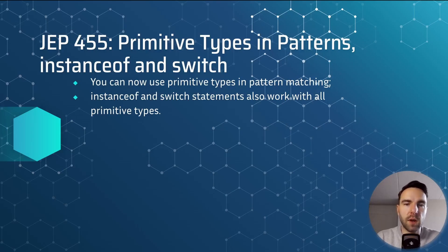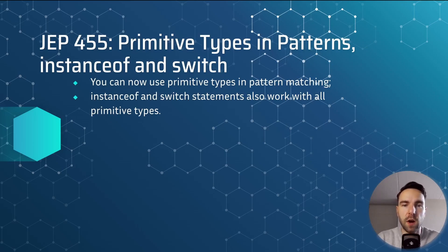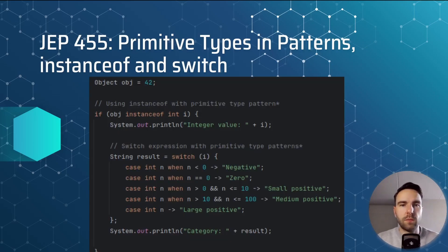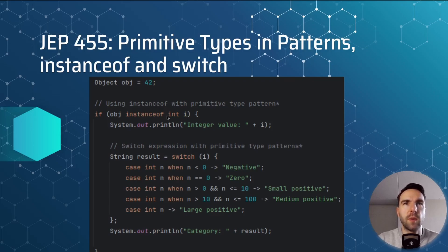In JEP 455 you can now use primitive types in pattern matching, and instanceof and switch statements now work with all primitive types. An example can be seen here where we use the instanceof operator on a primitive type and also a switch expression with primitive type patterns.